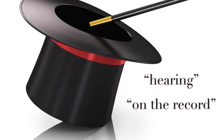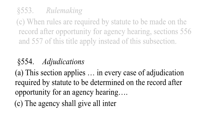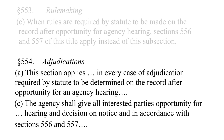It is also worth noting that this applies both to rulemaking and to adjudication. Section 553 says: when rules are required by statute to be made on the record after opportunity for agency hearing, Sections 556 and 557 apply instead of Section 553. Section 554 states: this section applies in every case of adjudication required by statute to be determined on the record after opportunity for an agency hearing; the agency shall give all interested parties opportunity for hearing and decision on notice and in accordance with Sections 556 and 557.